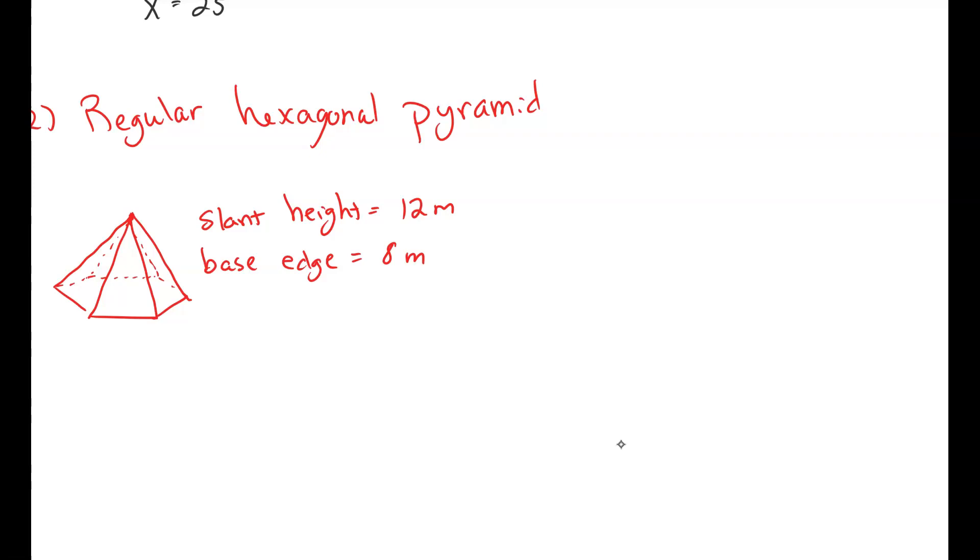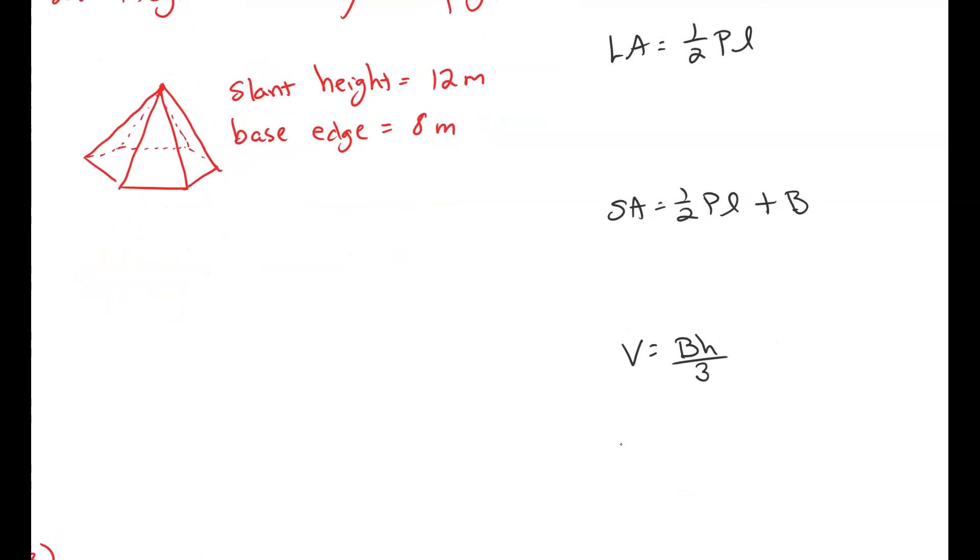So remember formulas for pyramid. We know lateral area is one-half perimeter of the base times slant height, plus the area of our regular polygon base. And then volume is area of the base times the height all over 3. Okay, my friends, so let's do what you're supposed to do for a pyramid and a prism. You always redraw the base.